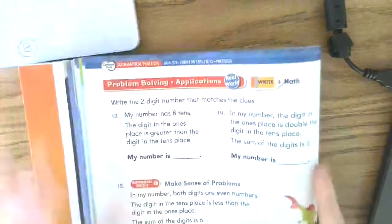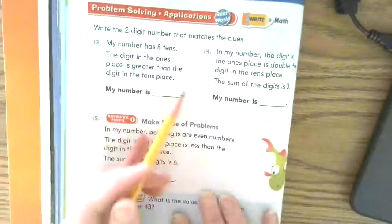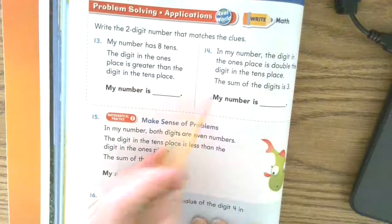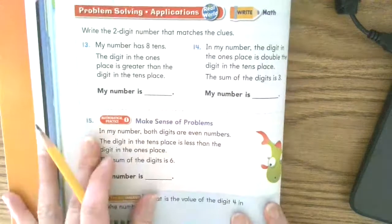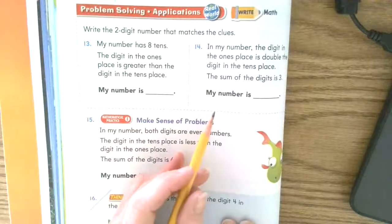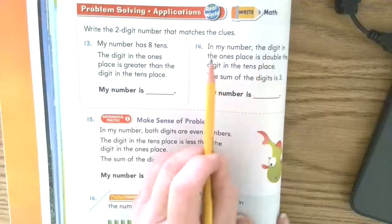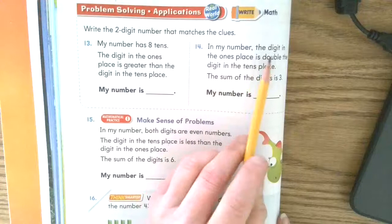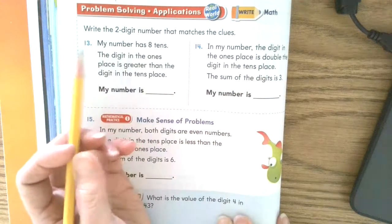Now on the back, this is where things were tricky. And that's why we talked about this sum of the digits thing. So 13, you should be able to figure out. 14 says in my number, the digit in the ones place is double the digit in the tens place.